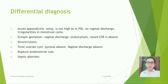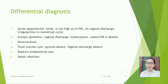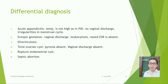Differential diagnosis: Acute appendicitis — temperature is not as high as in PID, no vaginal discharge, irregularity in menstrual cycle. Ectopic gestation — vaginal discharge and leukocytosis present, raised ESR absent. Diverticulosis. Twisted ovarian cyst — pyrexia absent, vaginal discharge absent. Ruptured endometriotic cyst. Septic abortion.